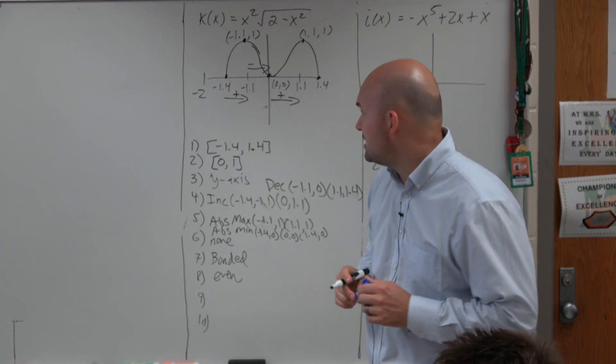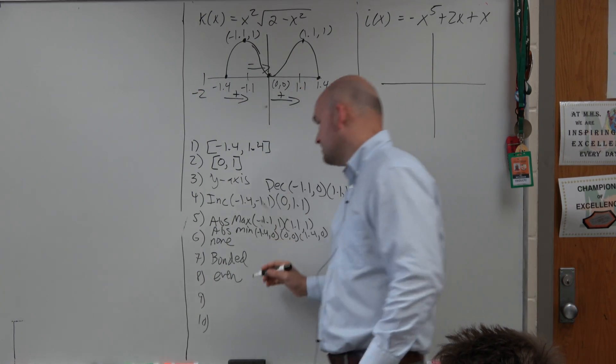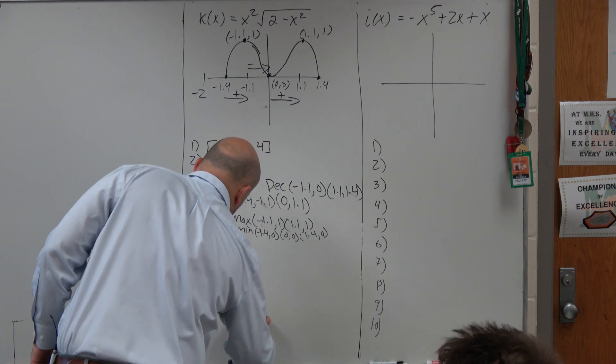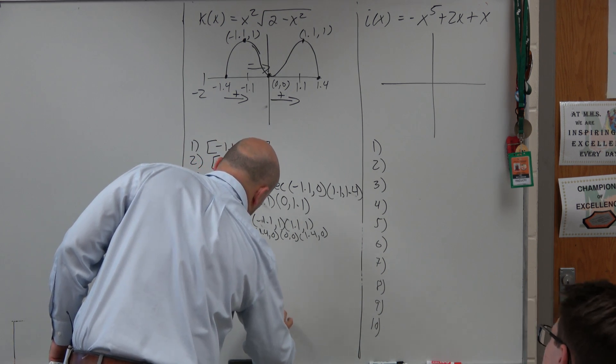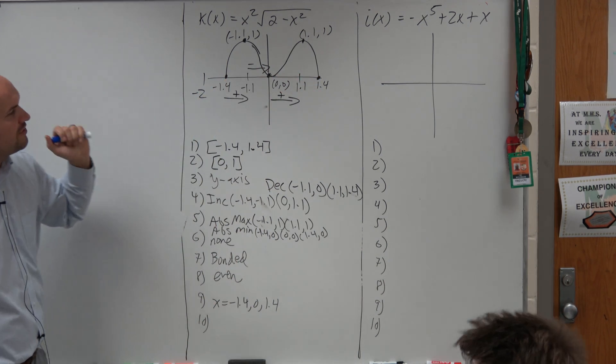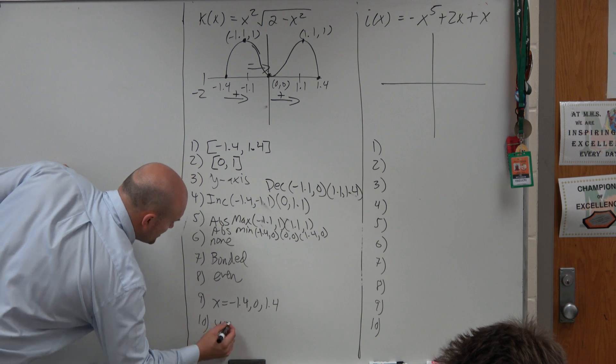Number 9, does it have x-intercepts? Yep, it has three of them. So we could say the x-intercepts are when x equals negative 1.4, 0, and 1.4. You could see all the points are across this. And does it cross the y-axis? Yep, at y equals 0.